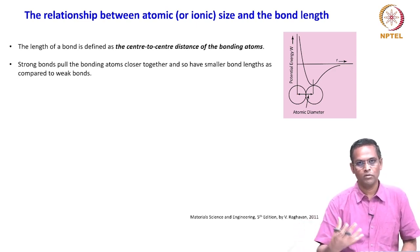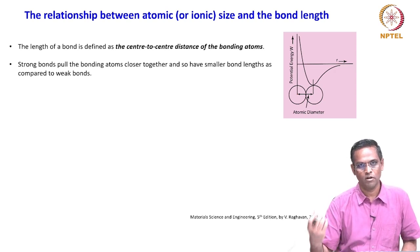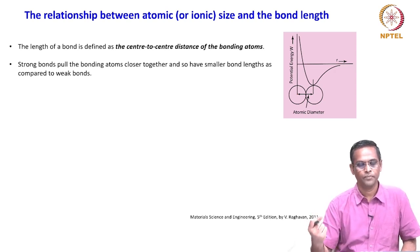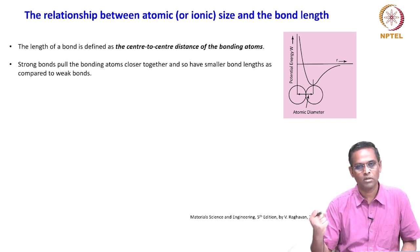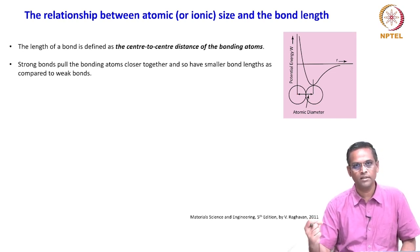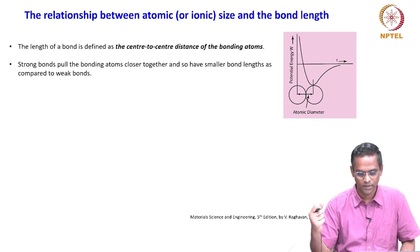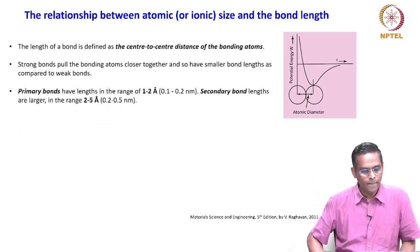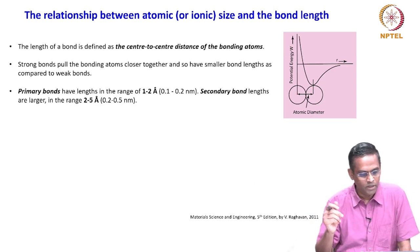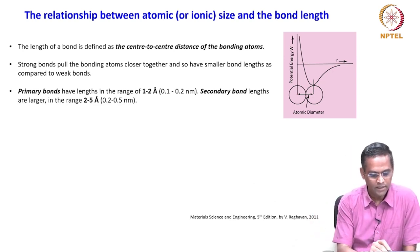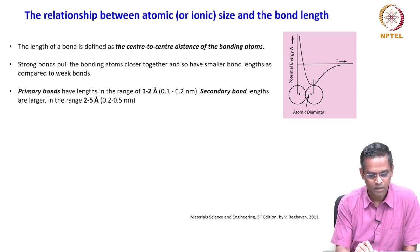We have now seen bond energies — how strong they are. Strong bonds will try to hold atoms together more tightly than weaker bonds like Van der Waals, hydrogen, or dipole bonds. For primary bonds, they have lengths in the range of 1 to 2 angstrom or 0.1 to 0.2 nanometers.